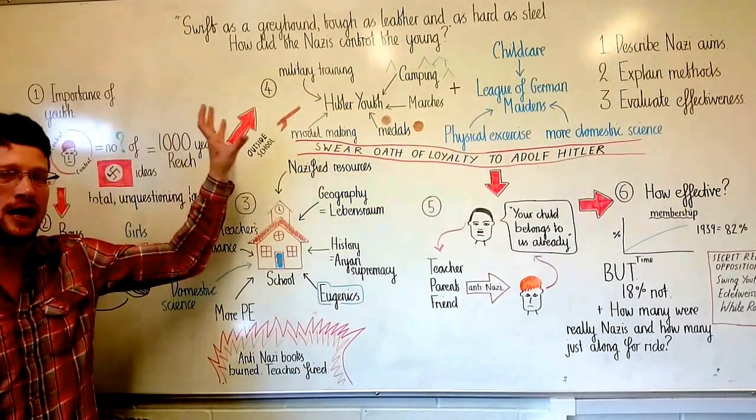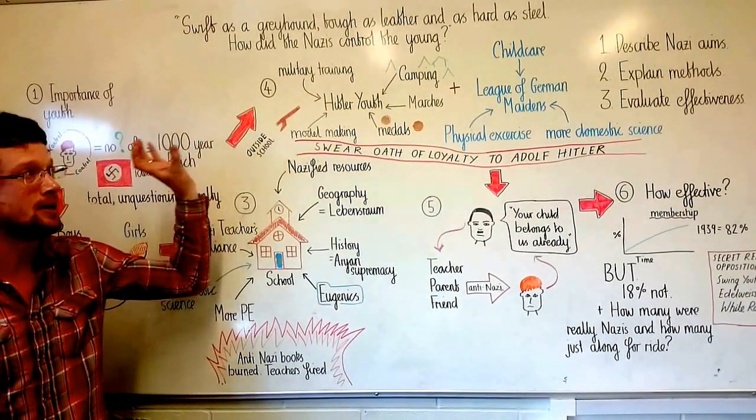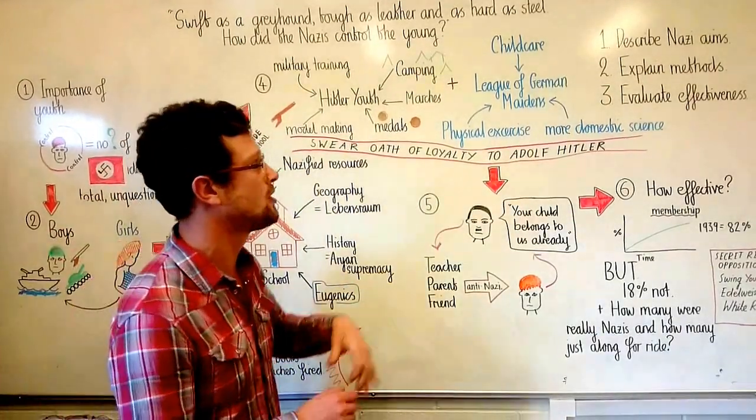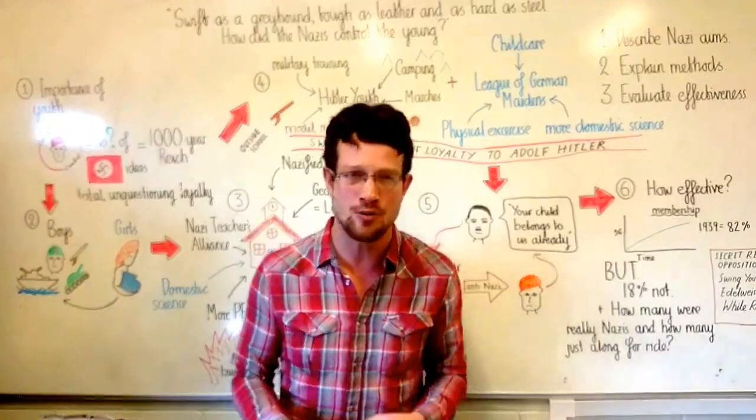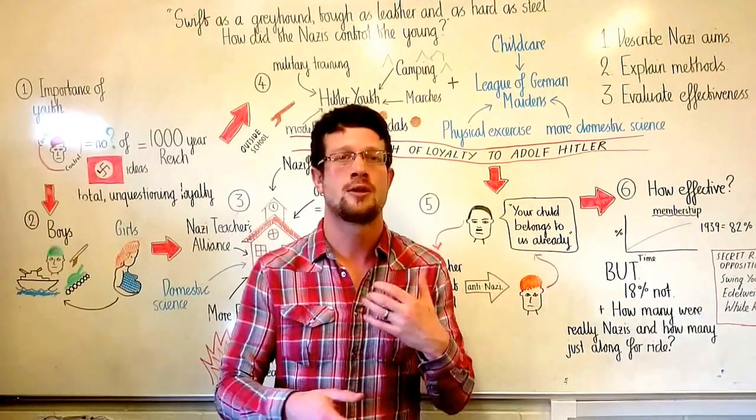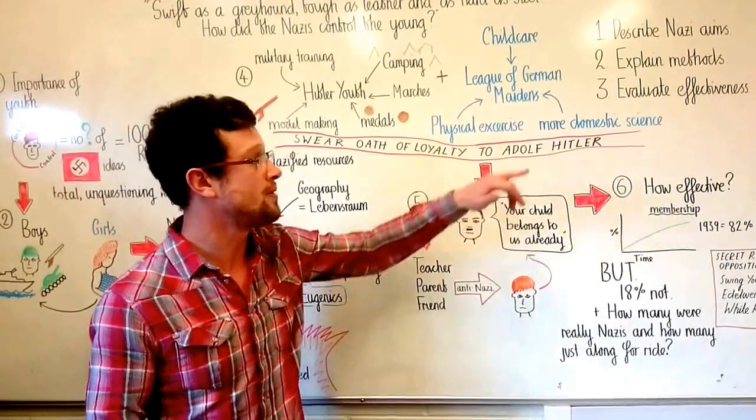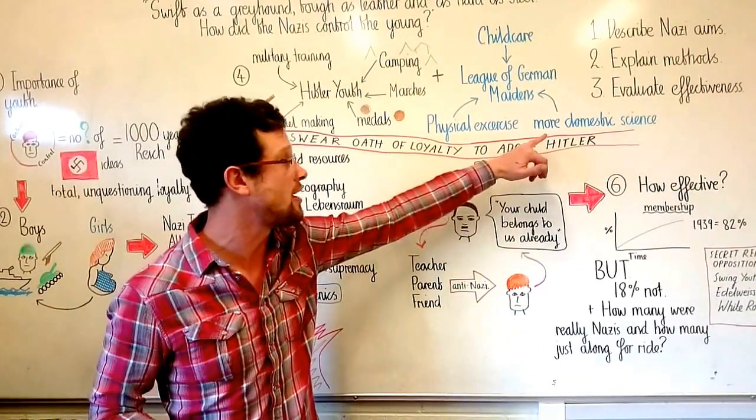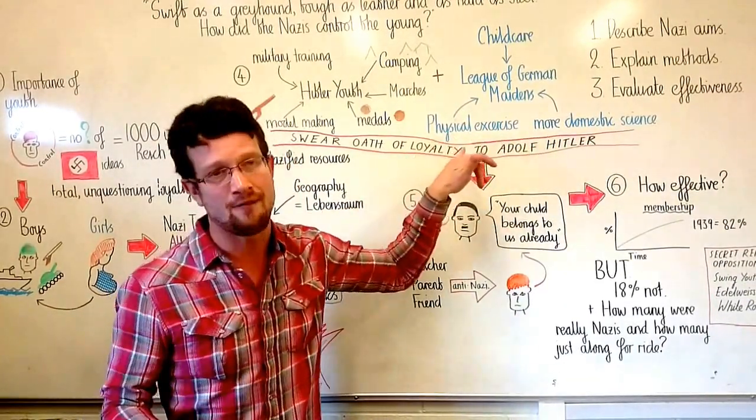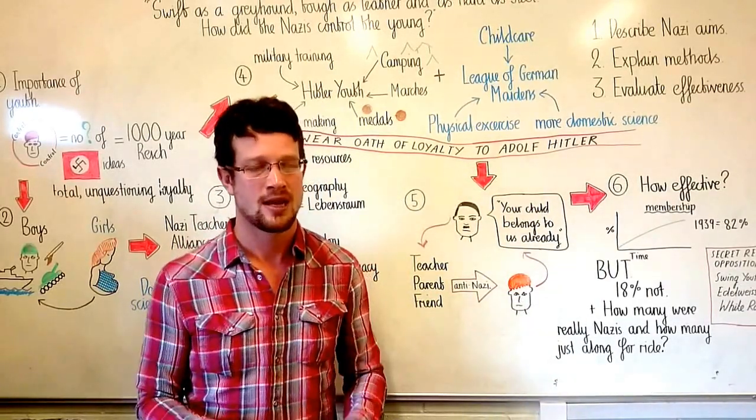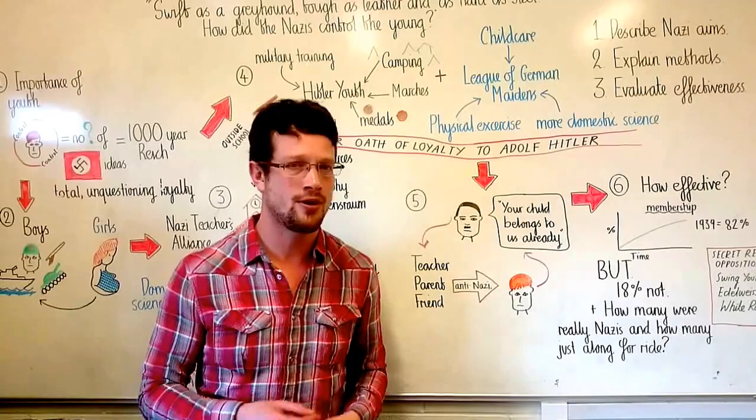Now it's clear to see what this was designed to encourage boys to become. For the girls, things were slightly different. Their organization was called the League of German Maidens and was much more concentrated on the perceived role for women—the idea that they should be able to look after children, they should be able to provide and cook for their families, and still an emphasis on physical fitness in order to make sure they would have healthy babies.